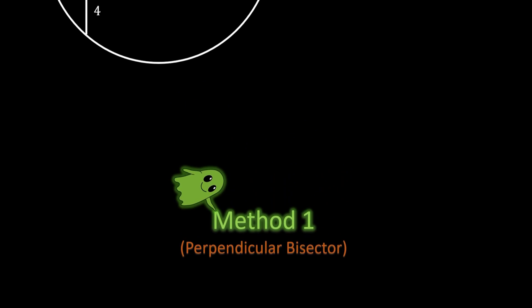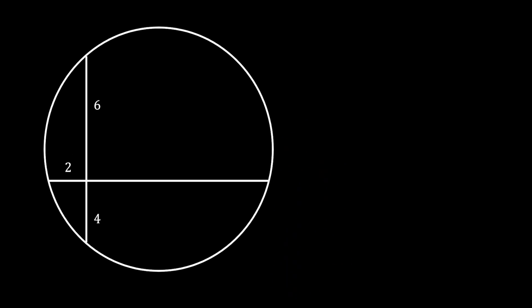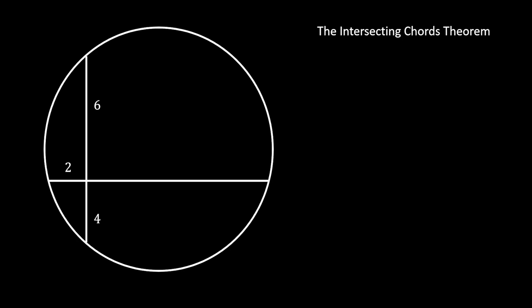In order to start with this method, I will first need to find the missing segment of the horizontal chord. The easiest way to do this is to use the intersecting chord theorem.